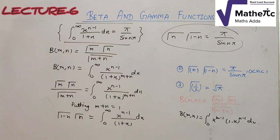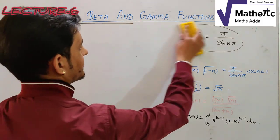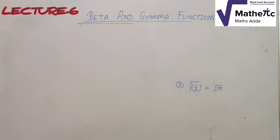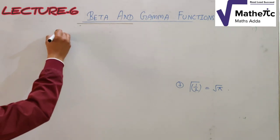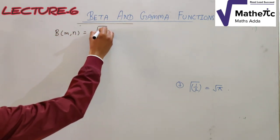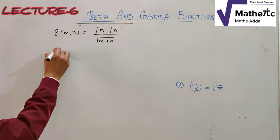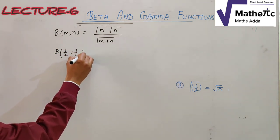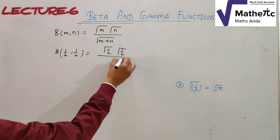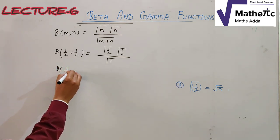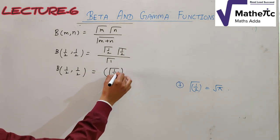The third and last result: prove that Γ(1/2) = √π. Starting from β(m,n) = Γ(m)·Γ(n)/Γ(m+n), put m = n = 1/2. Then β(1/2, 1/2) = Γ(1/2)·Γ(1/2)/Γ(1) = [Γ(1/2)]². Since Γ(1) = 1, we get β(1/2, 1/2) = [Γ(1/2)]² — call this Equation 1.